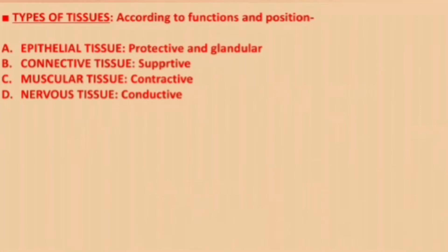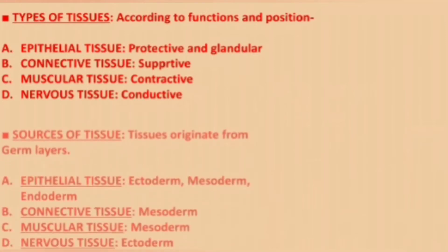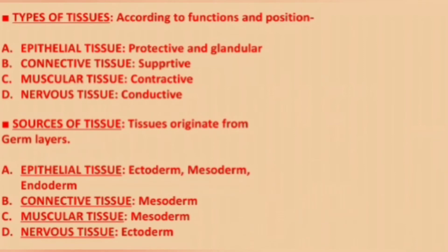Types of tissue according to functions and position: epithelial tissue involves protective and glandular functions; connective tissue is supportive; muscular tissue is contractile; and nervous tissue is conductive. According to sources, tissues originate from germ layers.